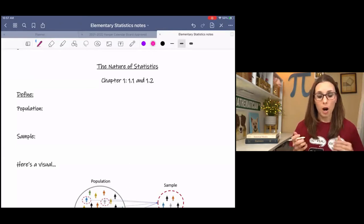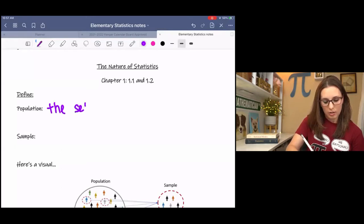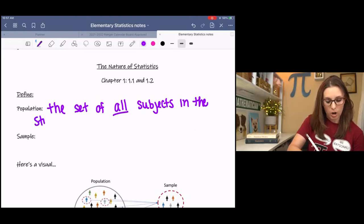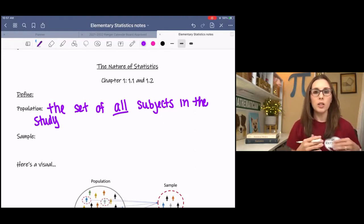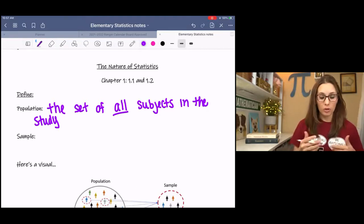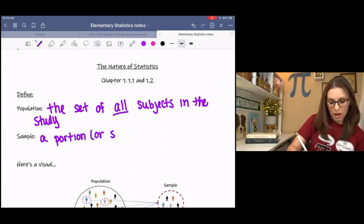And these are really important. A population is the set of all subjects in the study or under observation. So anytime you're reading something, if it says all, then that means we're talking about the population.